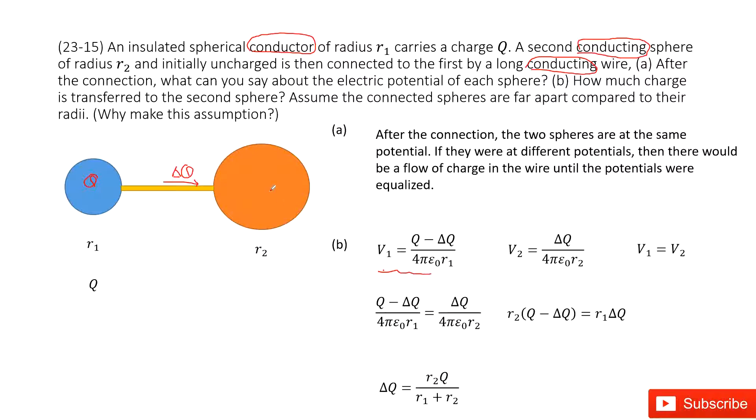And then we look at object 2. The charge it carries is ΔQ divided by 4πε₀R₂, and V₁ equals V₂.